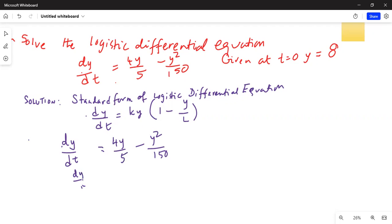So I can write dy by dt is equal to, I will take y first out and then I will get 4 over 5 minus y over 150. I have taken y out.